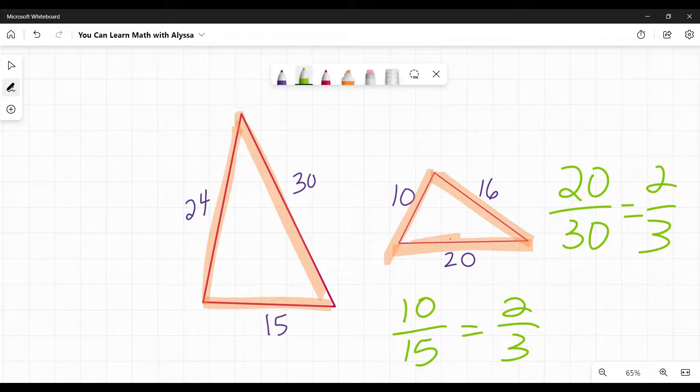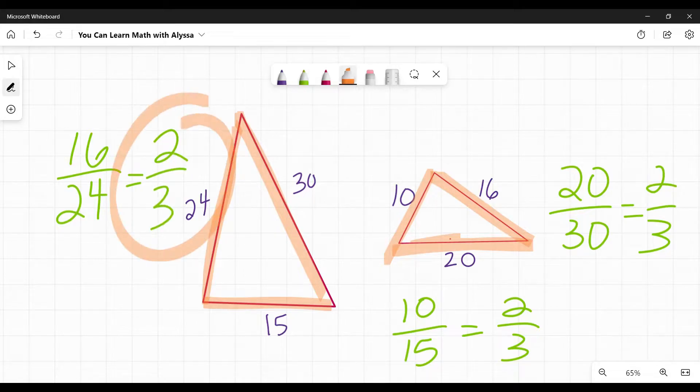16 and 24. Small to big is 16 to 24. And again, that simplifies to 2 thirds. Since all three of these ratios are the same, these two triangles are similar because of side-side-side similarity theorem.